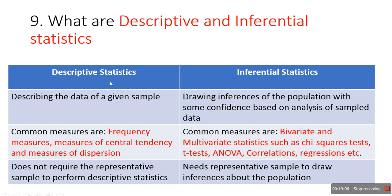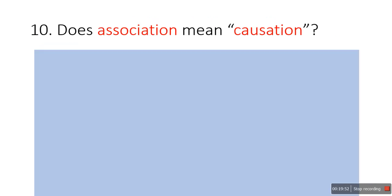The next question is: what are descriptive and inferential statistics? Descriptive statistics describes the data of a given sample; common measures are frequency measures, measures of central tendency such as mean, mode, and median, and measures of dispersion such as range and standard deviation. In inferential statistics, we draw inferences about the population with some confidence based on the sample data; common measures include bivariate and multivariate statistics such as chi-square test, t-test, ANOVA, correlation, and regression. Descriptive statistics does not require a representative sample, but inferential statistics does.